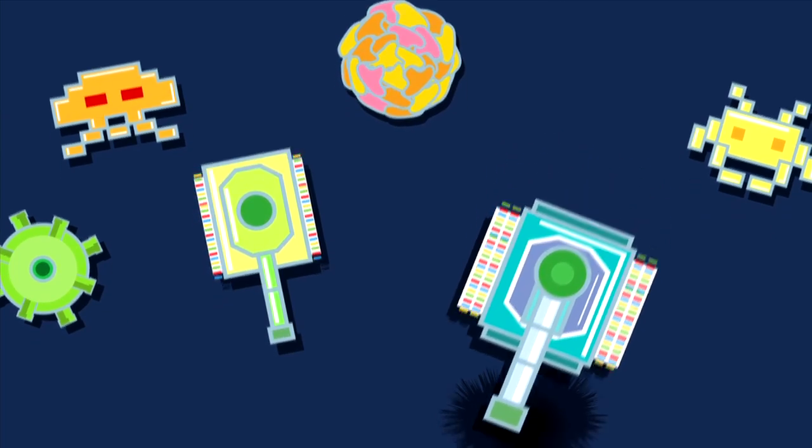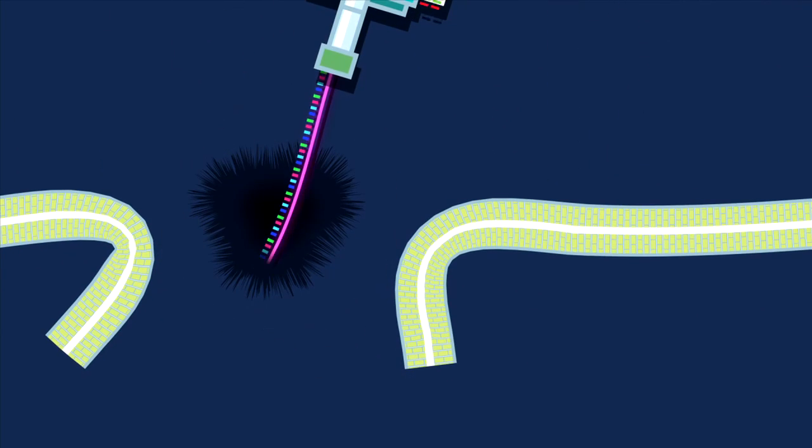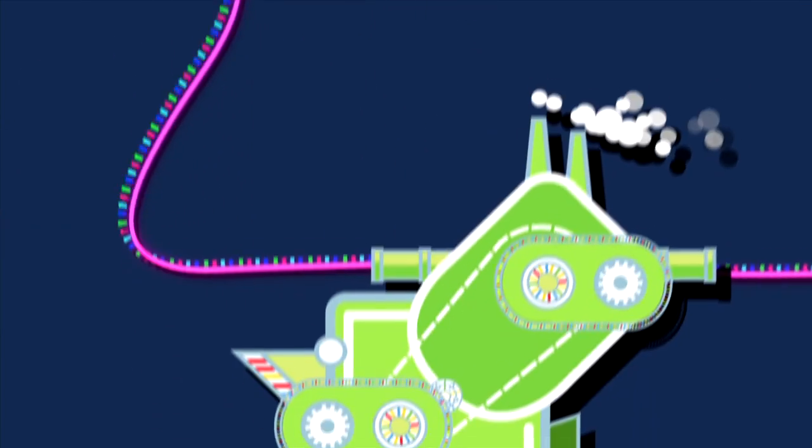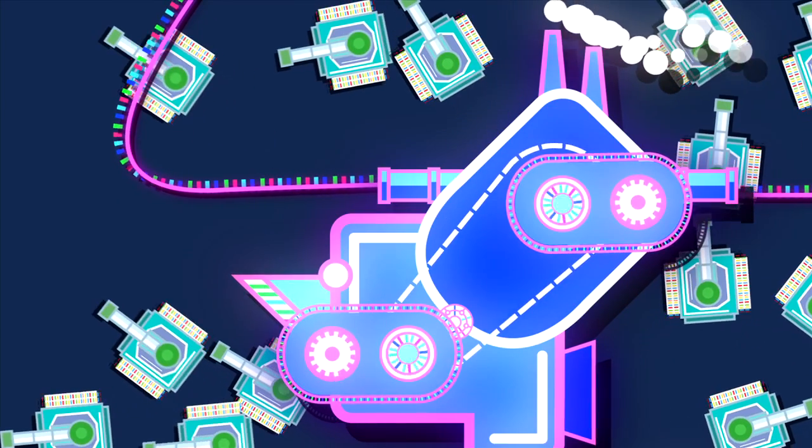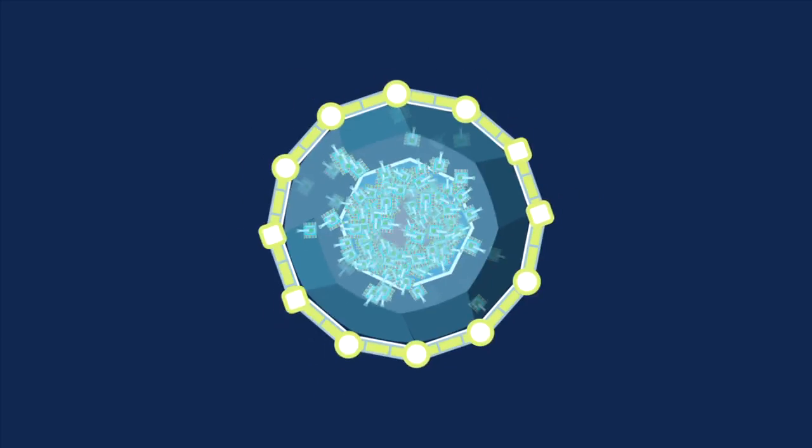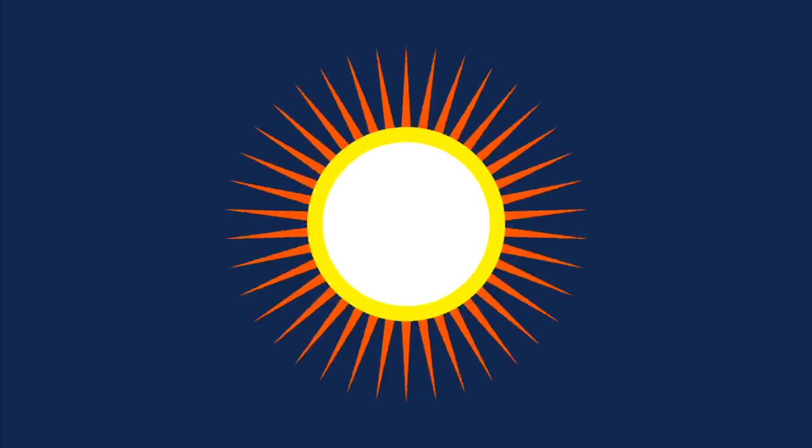Each virus is like a little tank that can blast a hole in the outer cell wall and send its forces in. These intruders change the blueprints in the factory's headquarters so the factory starts producing more viral tanks. It doesn't stop until it builds so many tanks that the cell bursts right open.